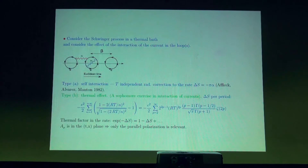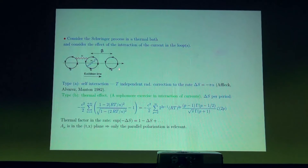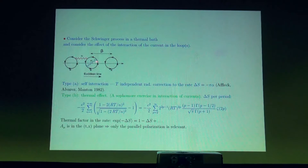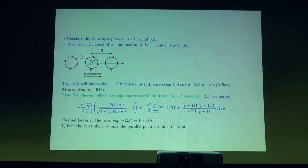Instead of doing complicated integrals, one can do high-school electrostatics. The tunneling trajectory for the Schwinger process is just a circle — an electron moving in a circle in Euclidean space. Consider it in a thermal bath. Then one should consider circles placed with period beta, the inverse temperature. There is a current flowing in each of these circles, and there is an interaction between these currents. Interactions are of two types: interaction within the circle, which does not depend on beta or temperature — that describes the radiative correction to the Schwinger exponent — and interaction between circles.